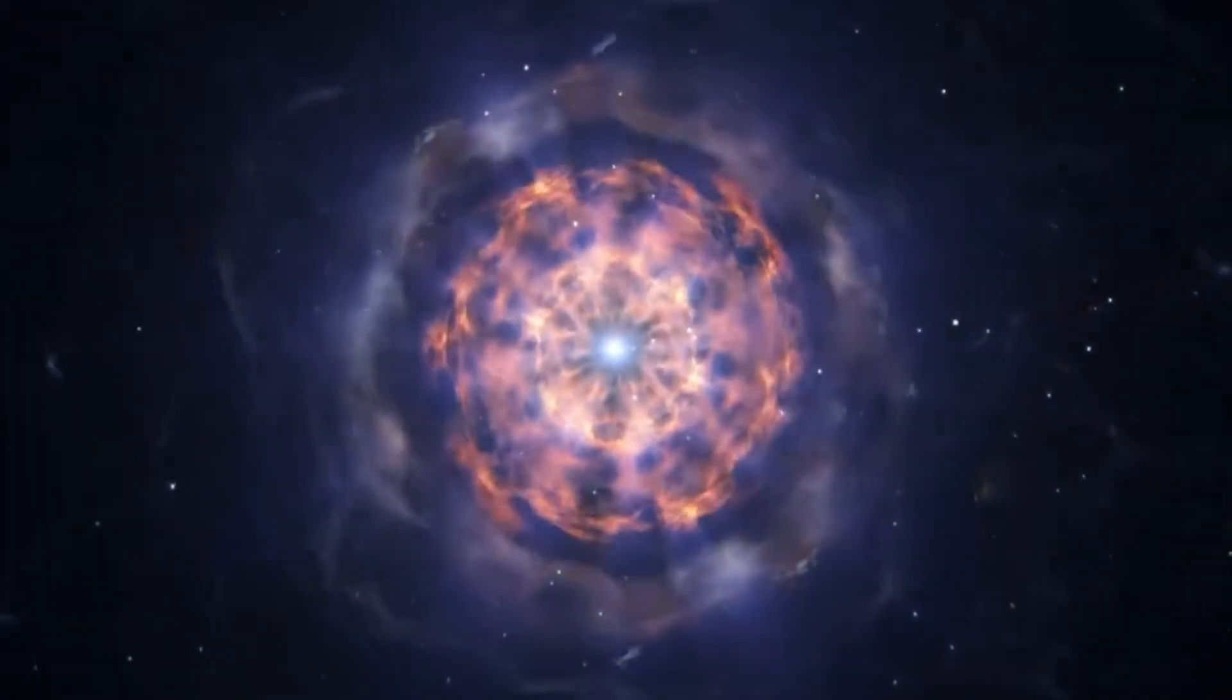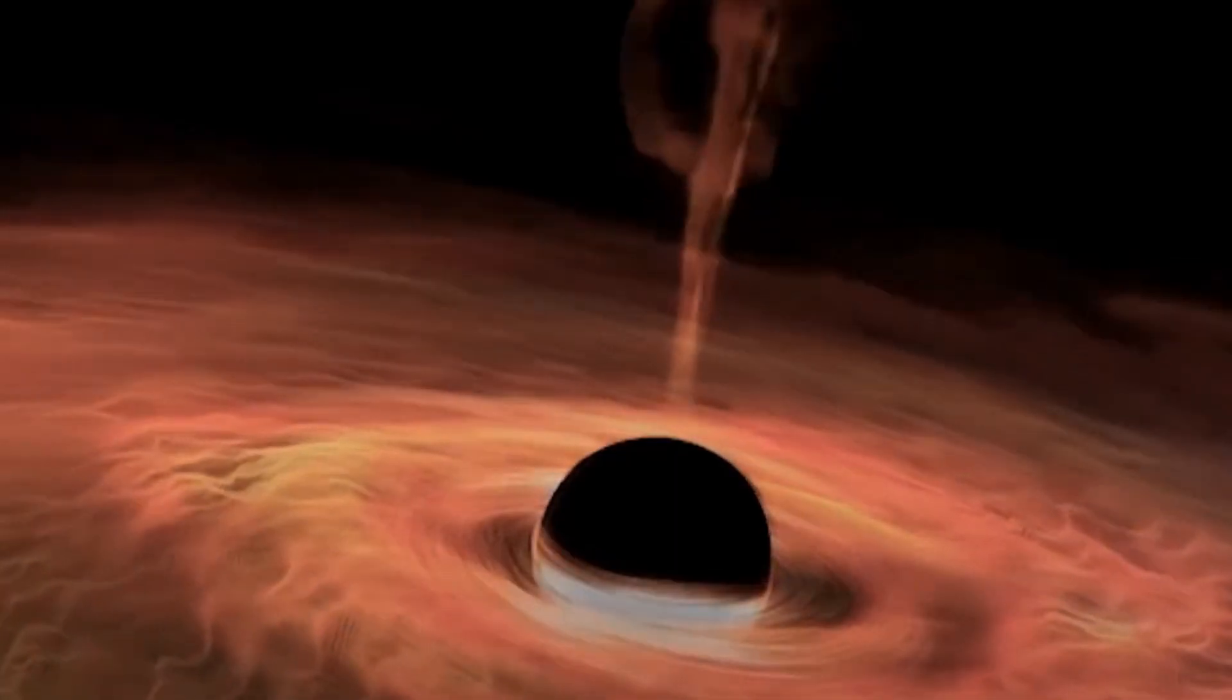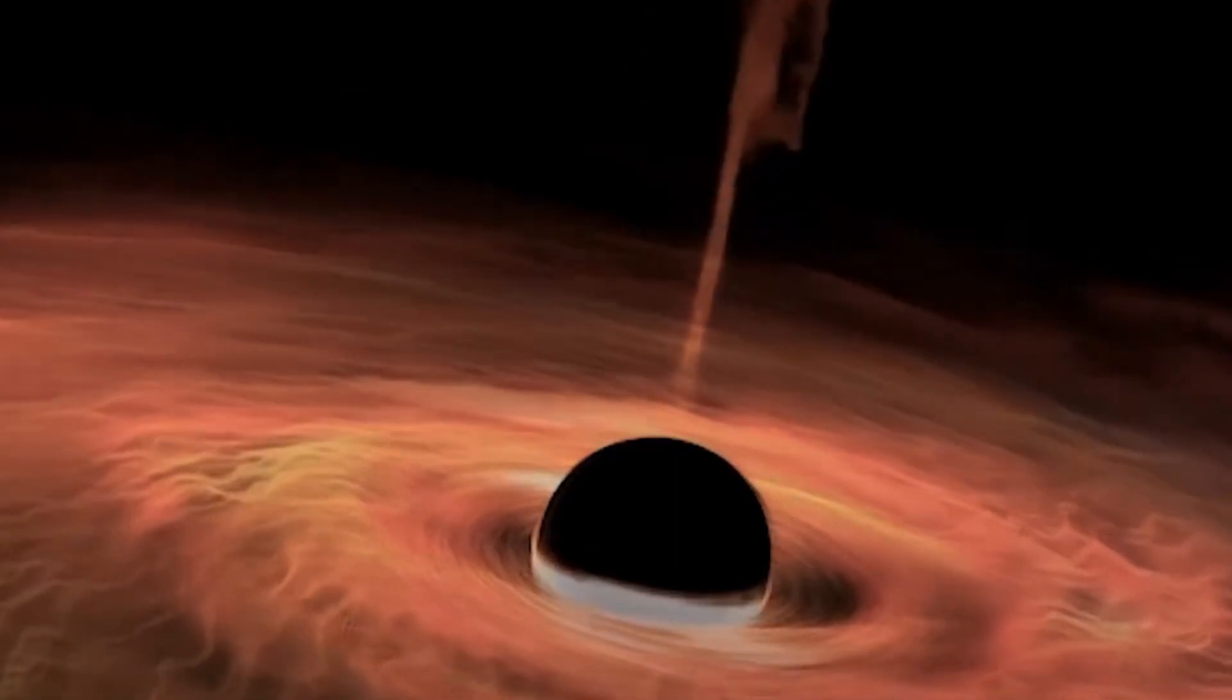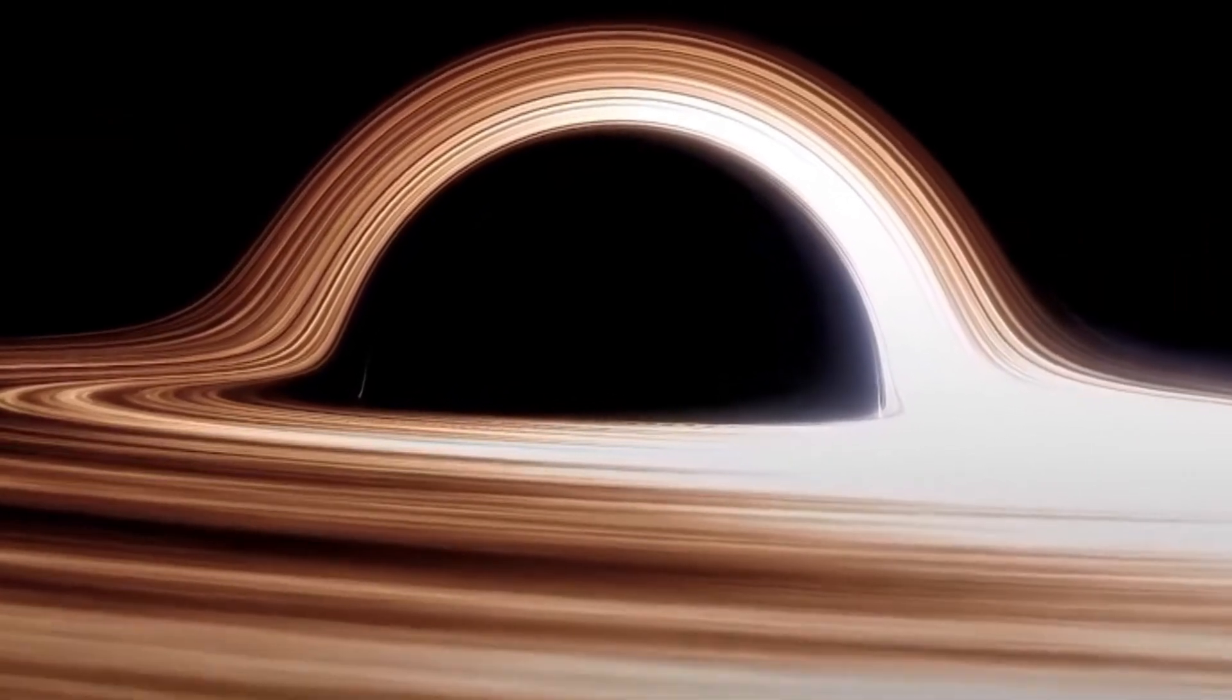Then gravity takes over and collapses the core, shrinking it down until not even light can escape its pull. That's why we can't see the core of a black hole.